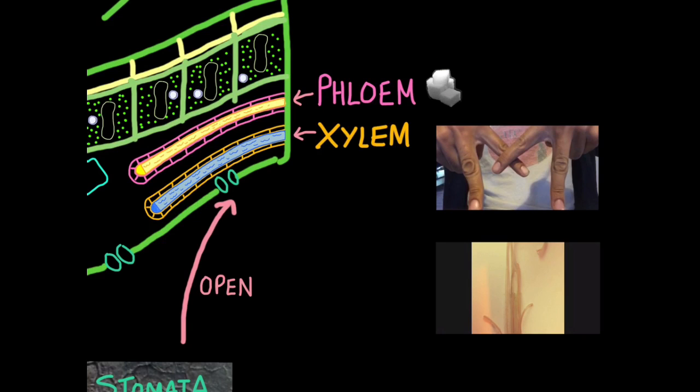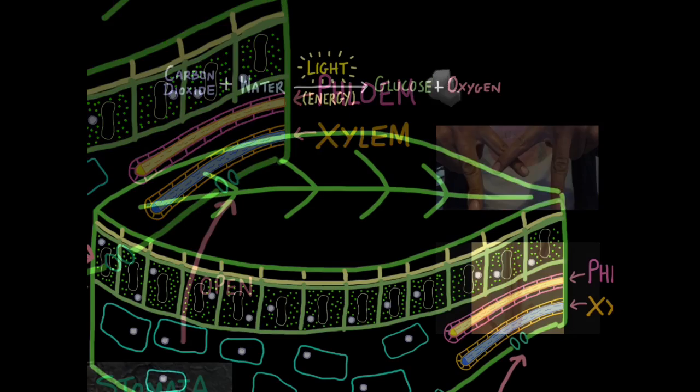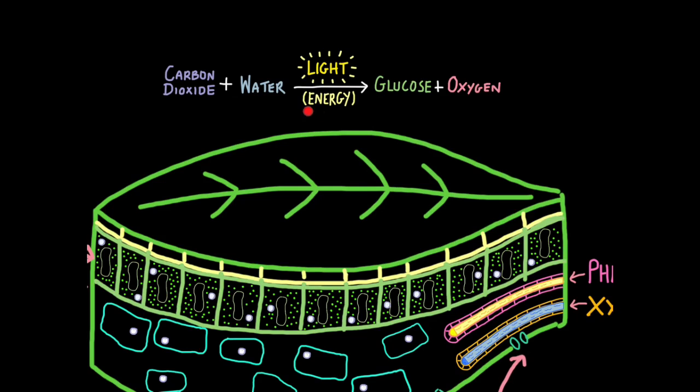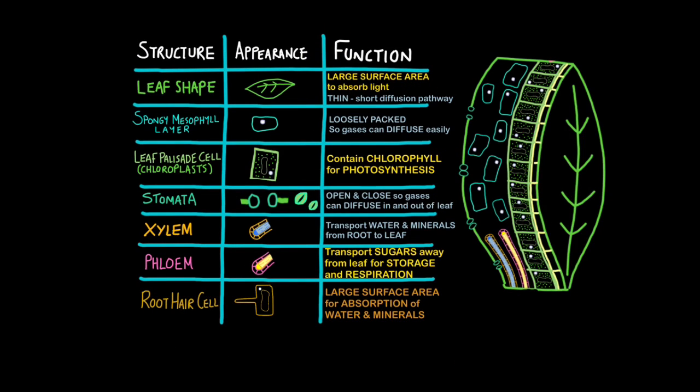Next, we have phloem vessels. Now, xylem transports materials up the leaf. The phloem transports materials away from the leaf. More specifically, it transports glucose in the form of sap. So the glucose is made by the palisade cells and the phloem transports the glucose to other parts of the plant for respiration and storage. Identifying the function of a phloem is also very important in exams. So now we can see how every part of the leaf caters for each part of this equation. You could get a six marker that asks you to explain how a leaf is adapted for photosynthesis or how a leaf is adapted for gas exchange.